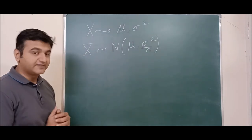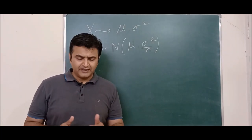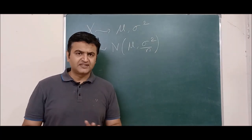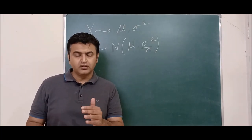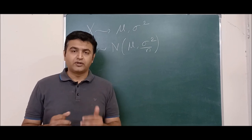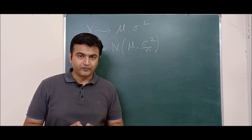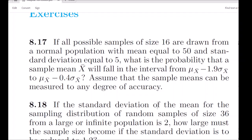Now let's go for the first example. I am going to take five to six problems, all from the exercises of the Walpole and Myers book. The first question is 8.17: if all possible samples of size 16 are drawn from a normal population with mean 50 and standard deviation 5.